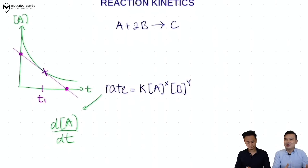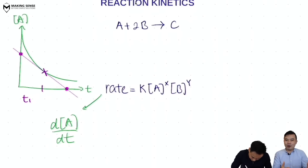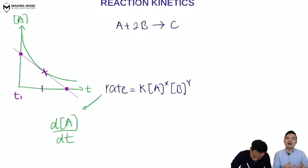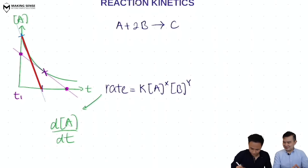What if we want to look at the initial rate? Then we make T₁ equal to zero. We take the point where T is zero, draw the tangent there, and find its gradient as well.